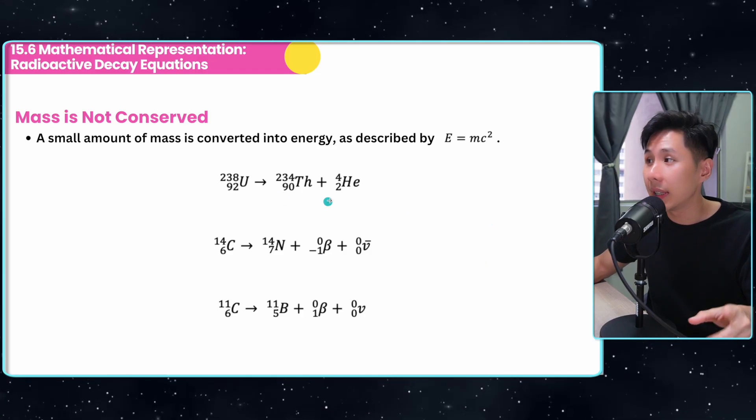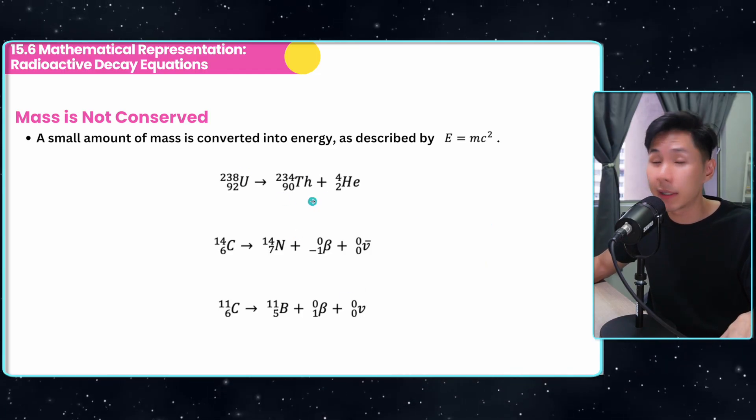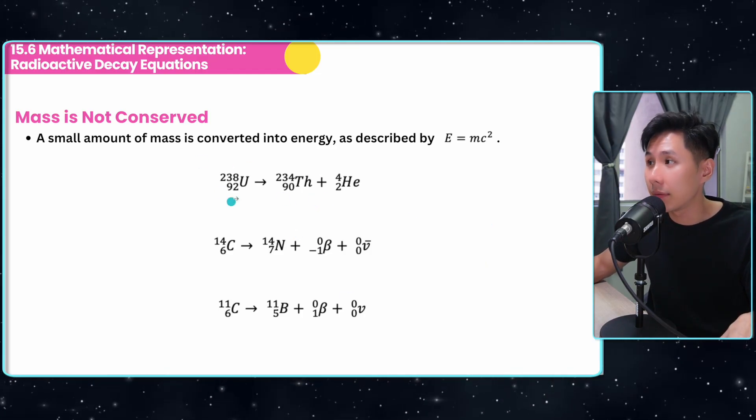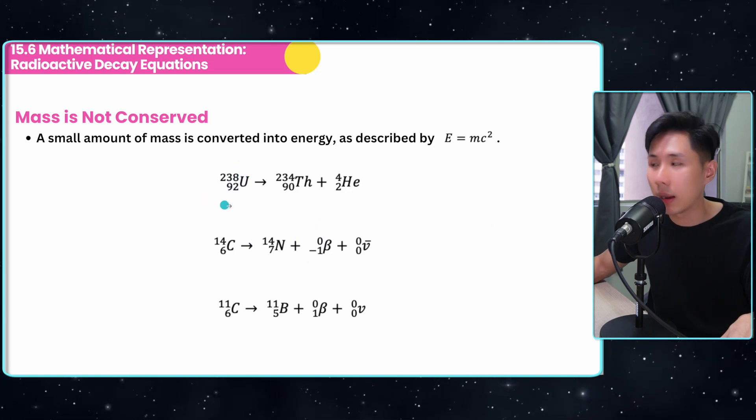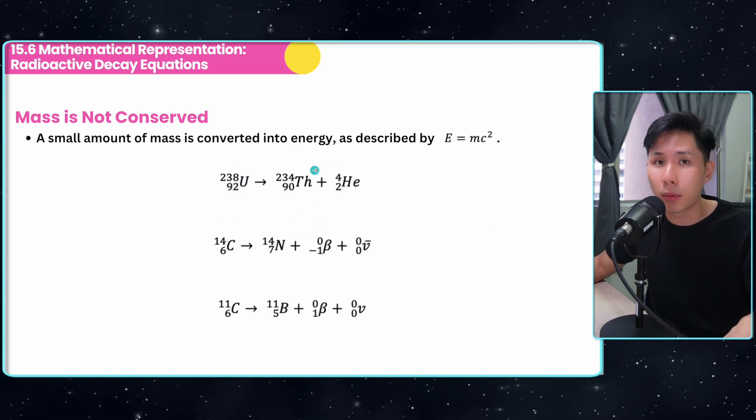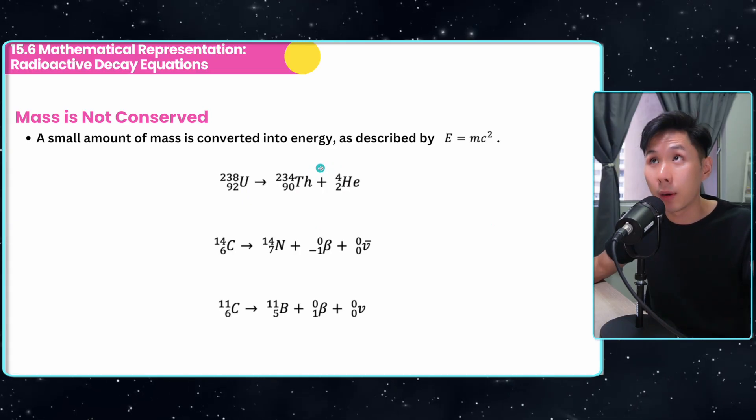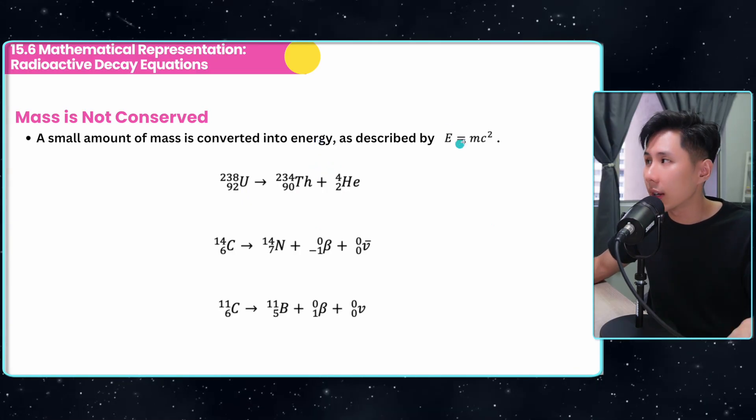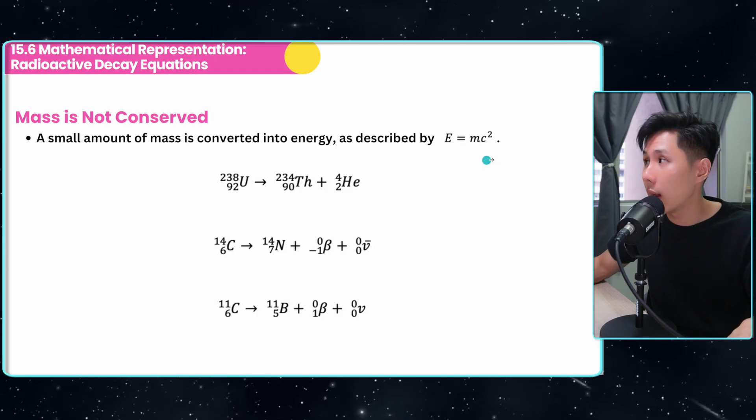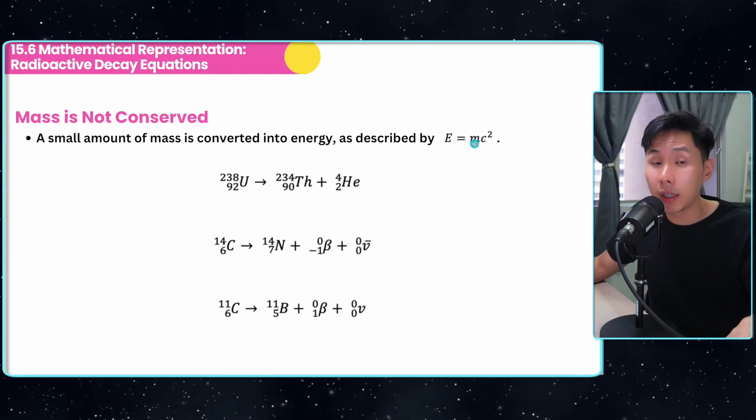However, one thing you need to know is that in this process, mass is not conserved. Meaning if before the reaction is one kilogram, after the reaction it could be 0.99999 kilogram. Where does the lost mass go? According to the equation E = mc², the lost mass has been converted into energy.